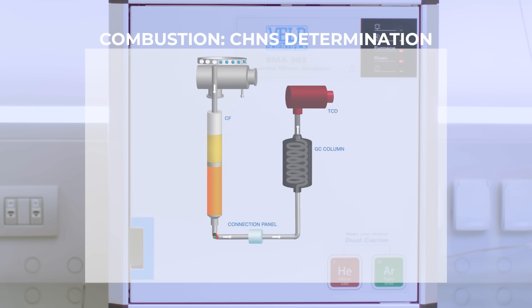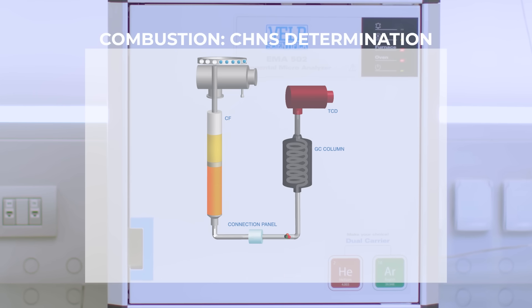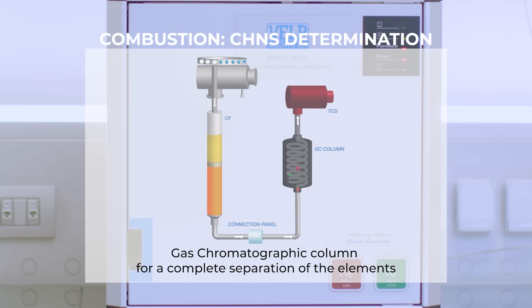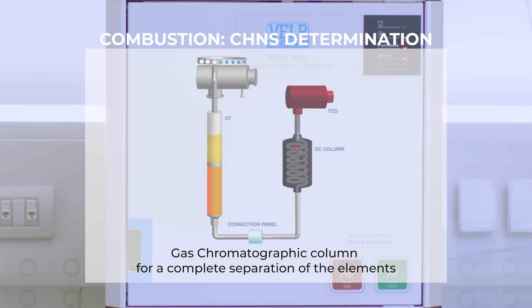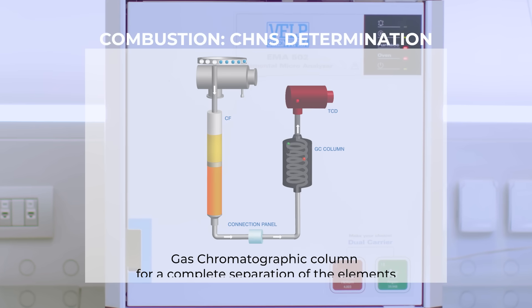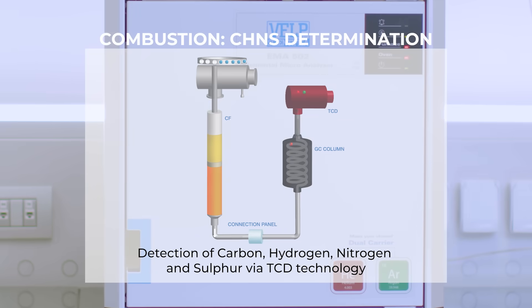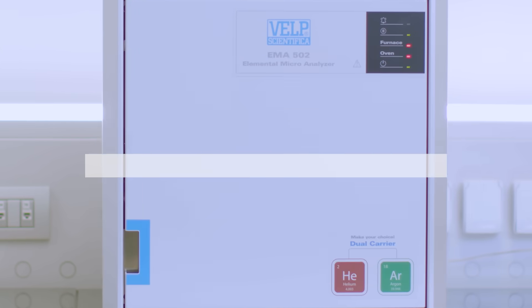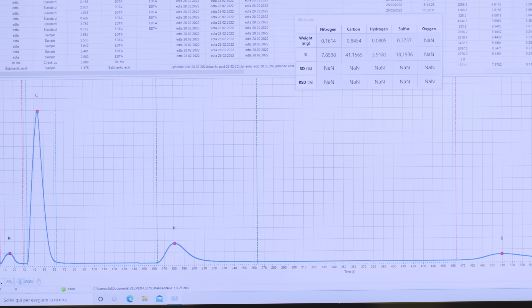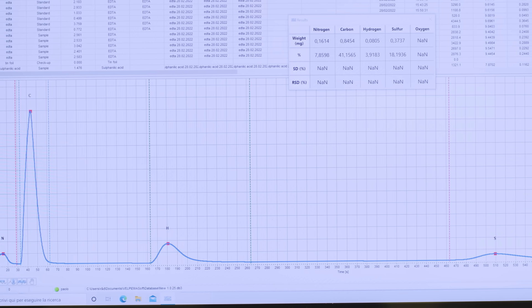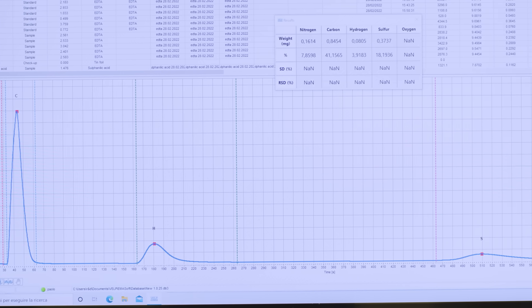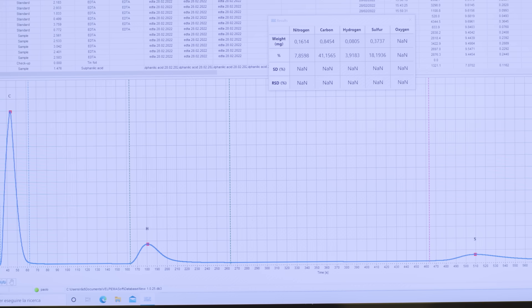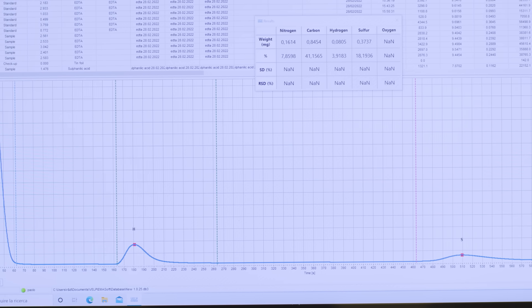The flow passes through the connection panel and then reaches the gas chromatographic column oven, which ensures homogeneous and modular temperature, leading to a complete separation of all the elements for the final detection by TCD. The EMAsoft real-time graph shows all element peaks for a detailed understanding of the analysis progress.